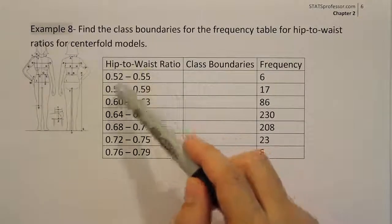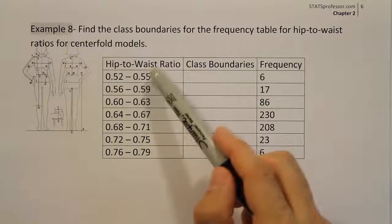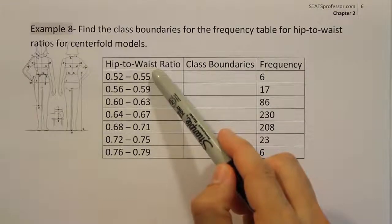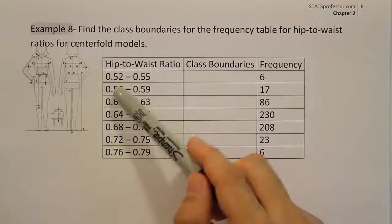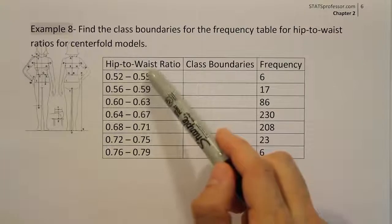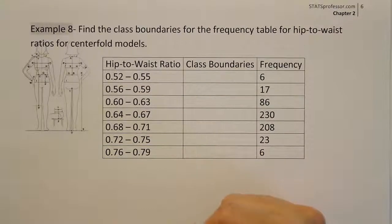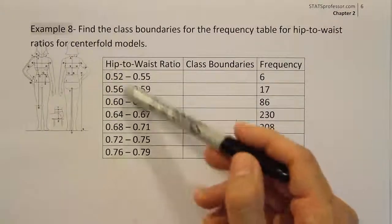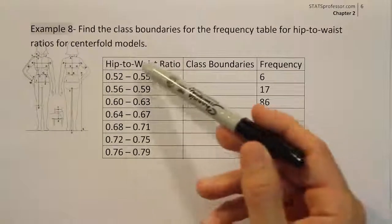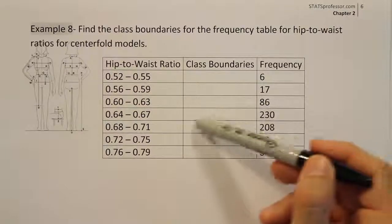The way we're going to do this is very simple. We're going to subtract the two numbers on the diagonal — that's the upper class limit of the first class from the lower class limit of the second class. We subtract them and divide the difference in half. Then we'll subtract that value from all the lower class limits and add it to all the upper class limits, and that will produce our class boundaries.